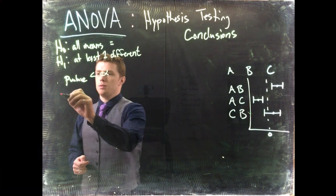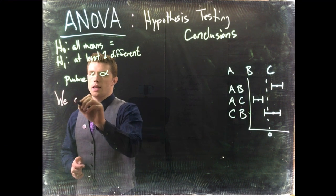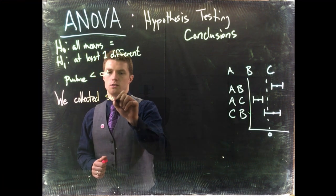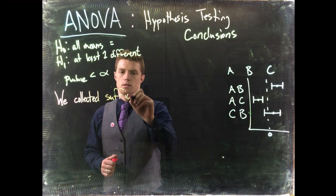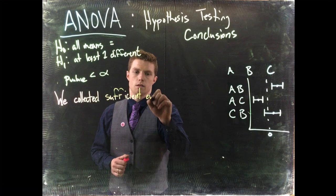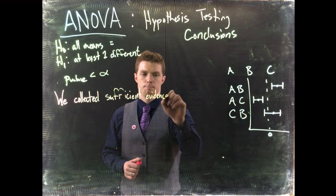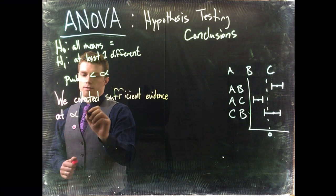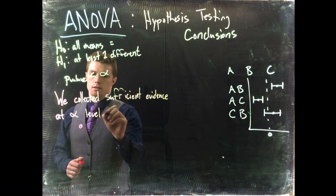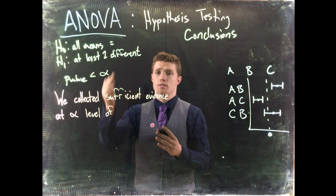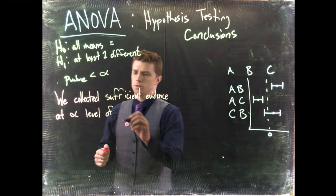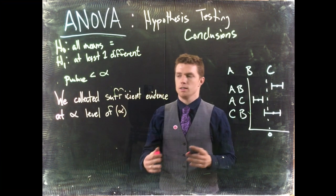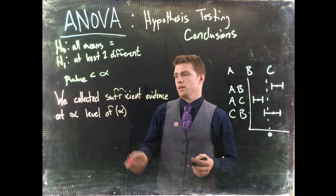We collected sufficient evidence at the alpha level—this would be whatever your alpha level is. If it's 0.05, you put 0.05 there. If it's 0.01, same thing.